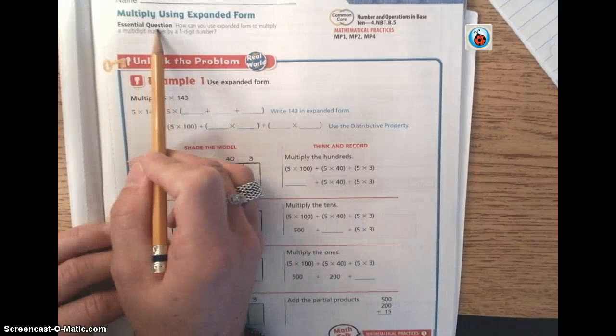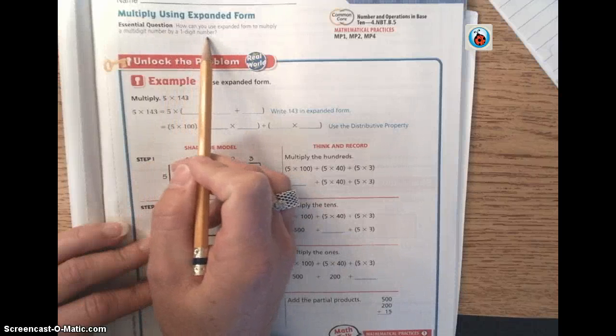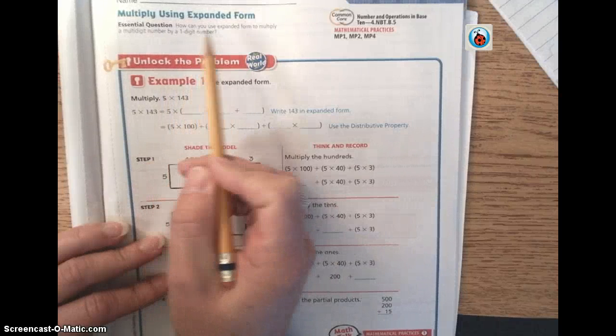Our essential question is, how can you use expanded form to multiply a multi-digit number by a one-digit number? Just another way.